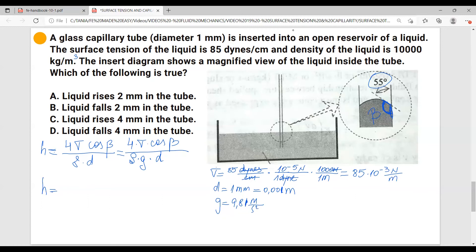Let's calculate the height of the liquid that is going to rise or fall into the tube. So we're going to have 4 times 85 times 10 to the minus 3 newtons over meter times cosine of 125, over density of the liquid which is 10,000 kilograms over meter cubed, times 9.81, times diameter which is 0.001 meters.